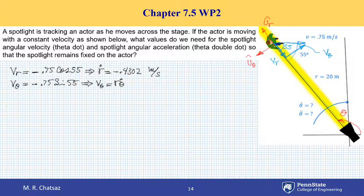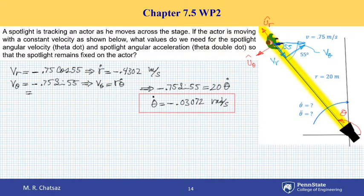So if I plug numbers in this equation, I can find theta dot, or angular speed of the spotlight. V sub theta is this numerical value, which is 0.75 sine 55, equals 20 meters times theta dot. So I can solve this equation and get theta dot equal to minus 0.03072, if I round to so many digits. And this is an angular speed, therefore the units must be radians per second. So that's one thing we were after.